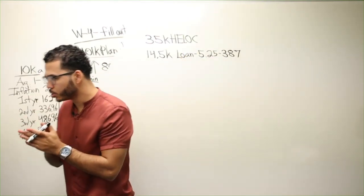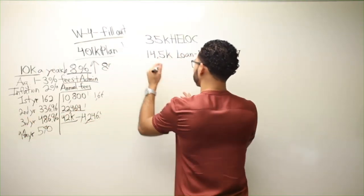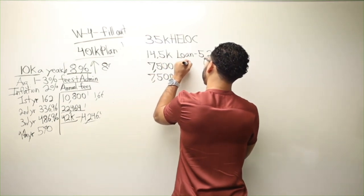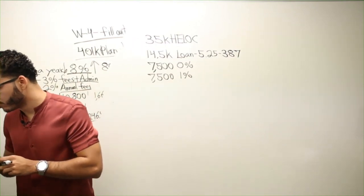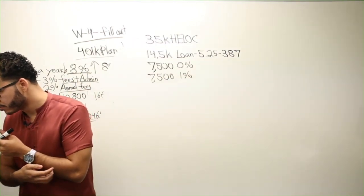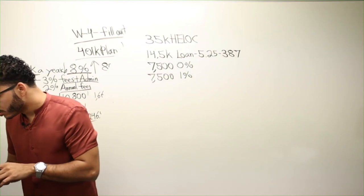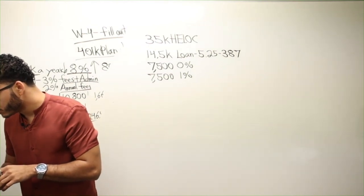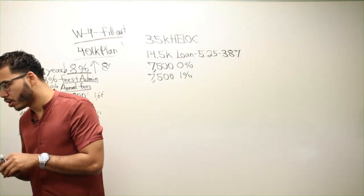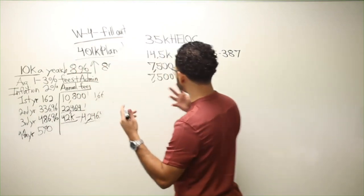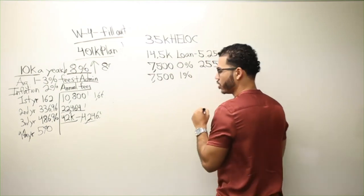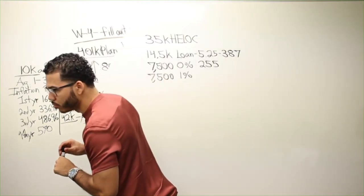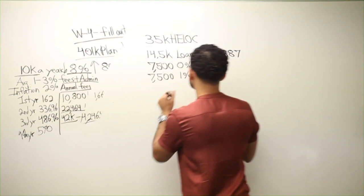$7,500 on each car note. One is at 0%, 1%. I'm assuming both of them are financed vehicles. One car note is $315 and the other is $255. I'm assuming that the 0% one is $255 and the 1% one is $315.